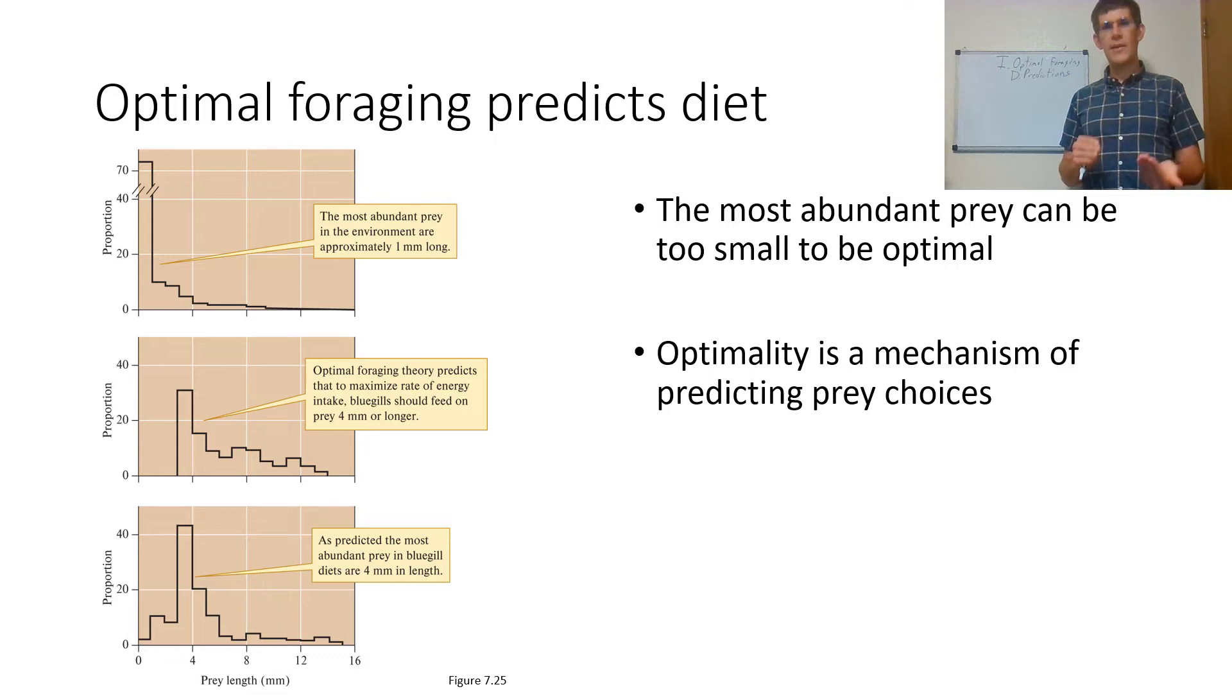But to maximize the rate of energy intake, it's better for bluegill sunfish to eat things that are four millimeters or longer. One millimeter is the most common, four millimeters or longer are needed to really maintain energy.